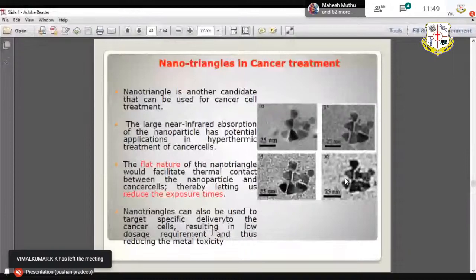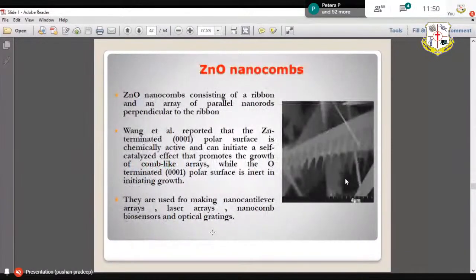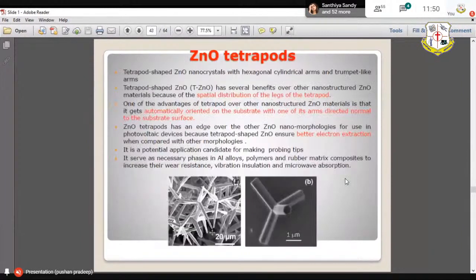Here as shown, the nanotriangles of zinc oxide material is used for cancer treatment. Zinc oxide material in nanotriangular shape which is used for cancer treatment. This image shows the zinc oxide nanocombs.